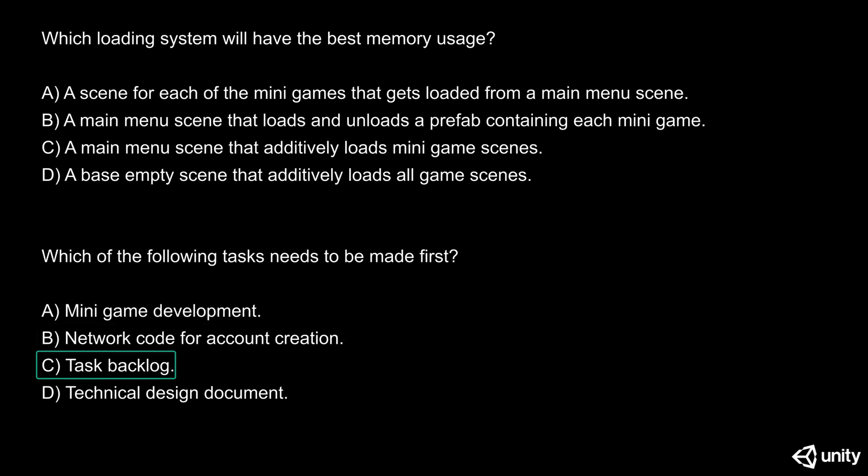Answer C: task backlog. Before we actually start doing any tasks on the project, it's a great idea to create a task backlog. This will provide a clear development path for the team. But we cannot create this out of nothing. Before that, we need to gather valuable information about needs, features, potential problems, and limitations the project might encounter. This is why we first need to create what answer D states: a technical design document. This document, along with the design document, will provide the necessary information to start creating a list of tasks needed to build all the features the project will have.